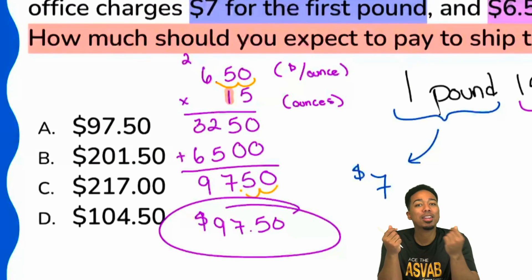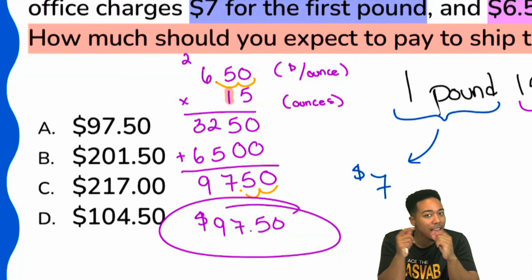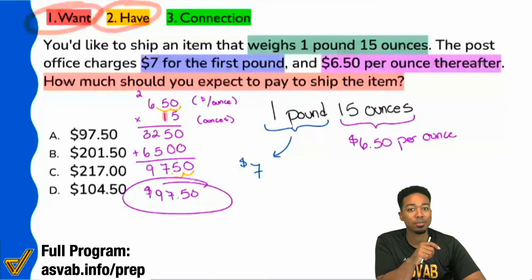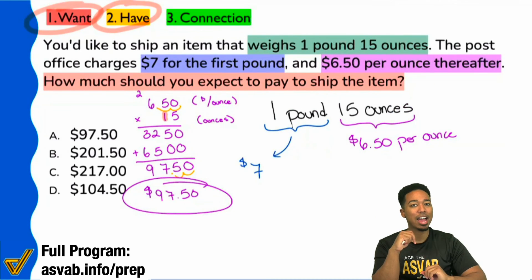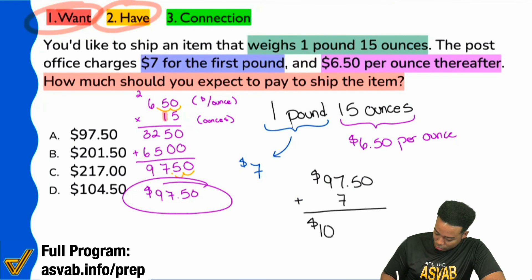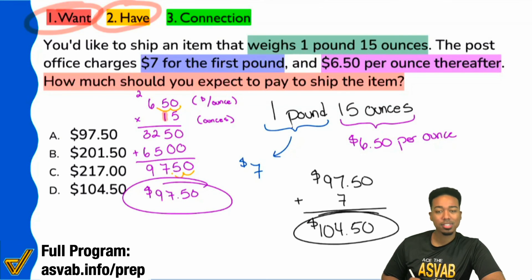We're trying to find what? The amount of money it costs to ship the item. If we're trying to ship this item, we're told that it was $7 for the first pound, and then the $6.50 per ounce after. That $6.50 per ounce after, totaled to $97.50. So, what we need to do is bring that back with the $7. And once we do that, well, $97.50 plus the $7, that's going to bring us to $104.50. There we are. And the correct answer will be D.